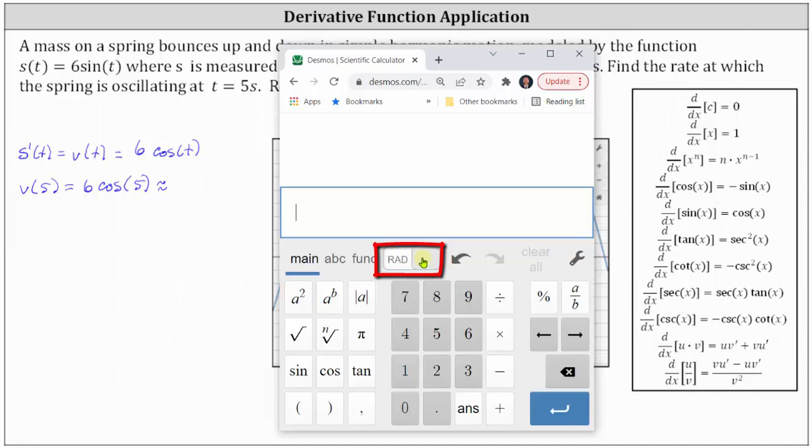This is degree mode. This is radian mode. In radian mode, we enter 6cos(5). Enter. And again, we're told to round to four decimal places.